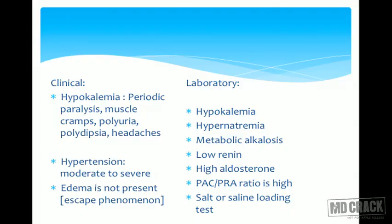Laboratory evaluation shows metabolic alkalosis, low renin, and high aldosterone — elevated aldosterone-to-renin ratio. In renal artery stenosis, we have high-renin hypertension; in primary hyperaldosteronism, aldosterone production is renin-independent, so high aldosterone exerts negative feedback on renin, resulting in low renin with high aldosterone.